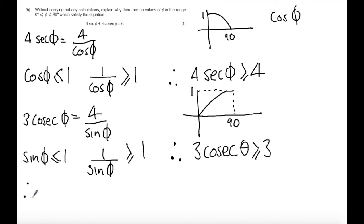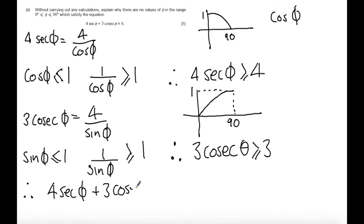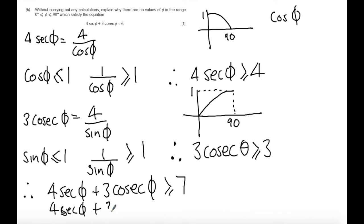As a result, 4secφ + 3cosecφ ≥ 4 + 3 = 7. Therefore 4secφ + 3cosecφ cannot equal 6 at any point in the range 0° to 90°.